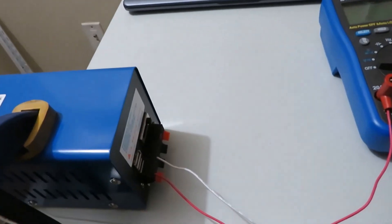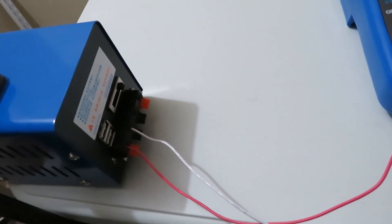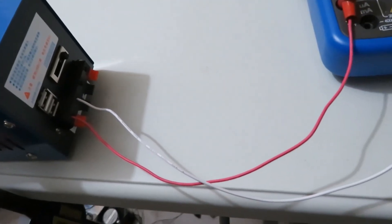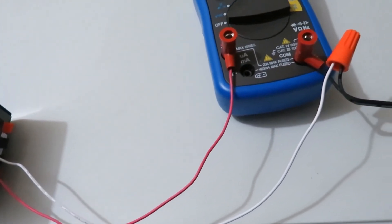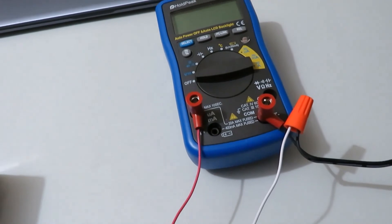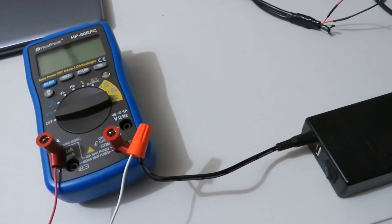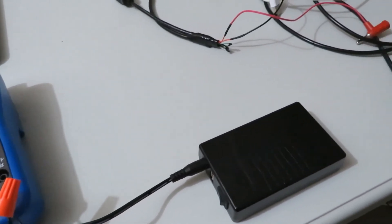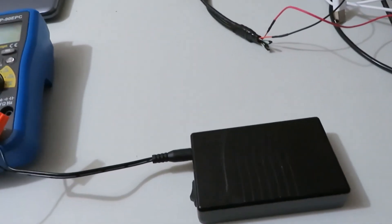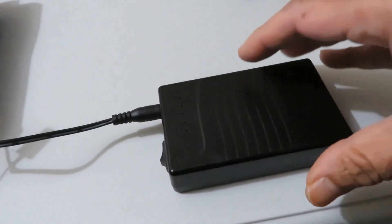Later we can charge our cell phone by connecting it with the battery bank. This way we can utilize the full power of the generator. I am showing here connecting the generator with the 11.2-volt battery bank.